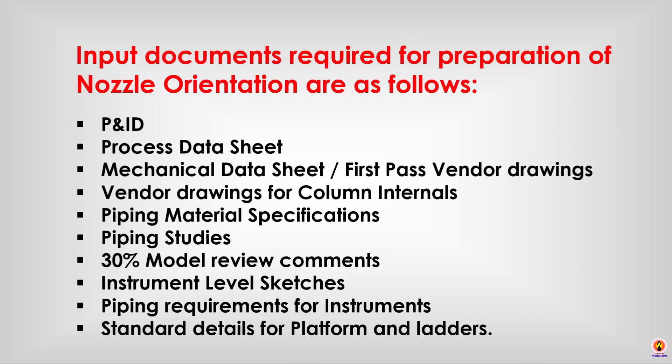Input documents required for preparation of nozzle orientation are as follows: P&ID, process data sheet, mechanical data sheet, first-pass vendor drawing, vendor drawing for column internals, piping material specification, piping studies and 30% model review comments, instrument level sketches, piping requirements for instruments, and standard details for platforms and ladders.